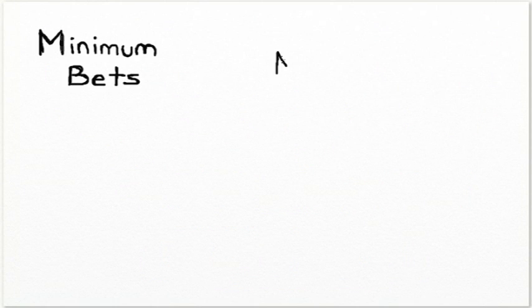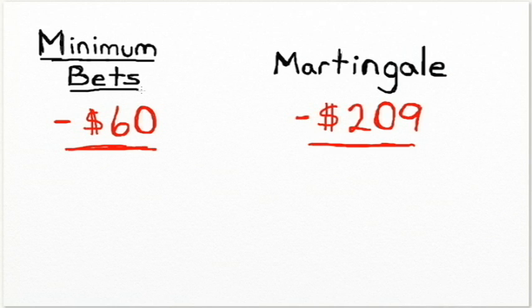Now if you played the same amount of spins by just placing a minimum bet on black or red every time, you'll be expected to lose about $60. So not only will the Martingale system not make you any money, it's actually pretty devastating to your total payout.